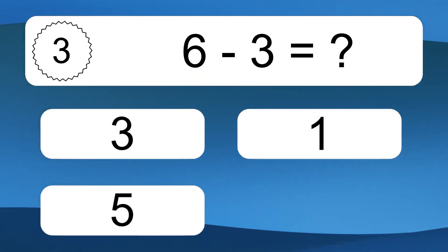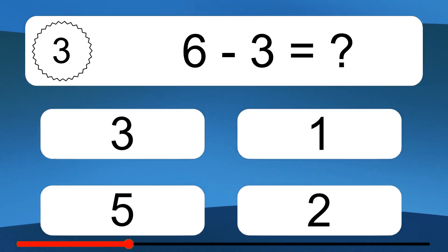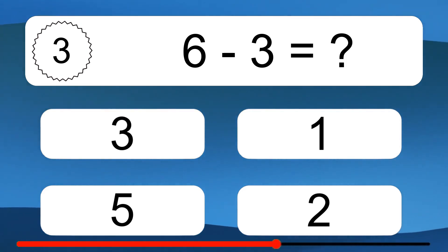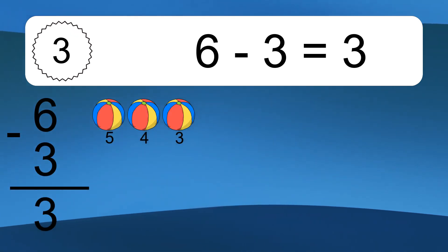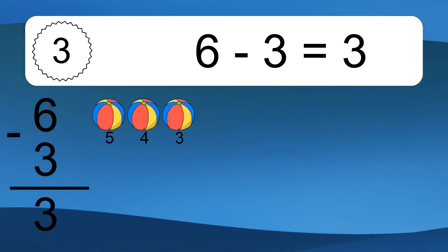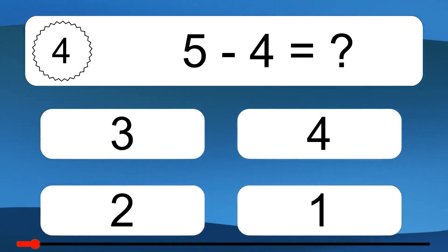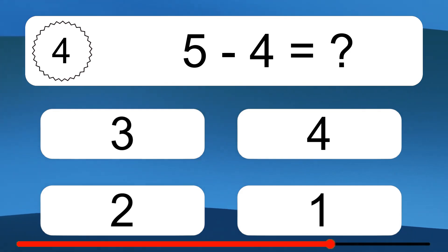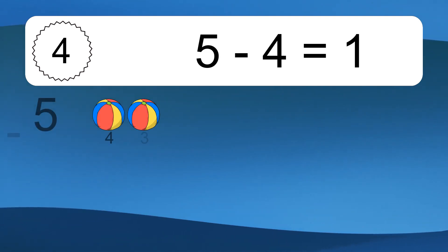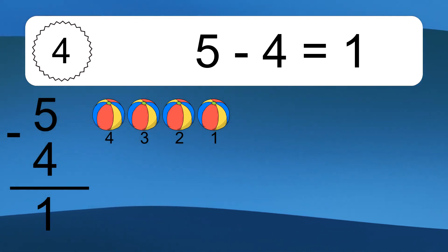6 minus 3 equals what? 6 minus 3 equals 3. Let's count it: 5, 4, 3. 5 minus 4 equals what? 5 minus 4 equals 1. Let's count it: 4, 3, 2, 1.